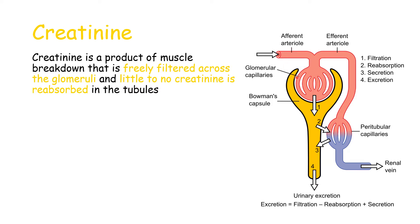Here we have the glomerulus, Bowman's capsule, and the renal tubules and peritubular capillaries. Arrow number one represents filtration. When we say creatinine is freely filtered across the glomeruli, it means that all creatinine arriving at the glomerulus ends up going through into the tubules. Arrow number two is reabsorption — there is a negligible amount of creatinine reabsorbed into the body.